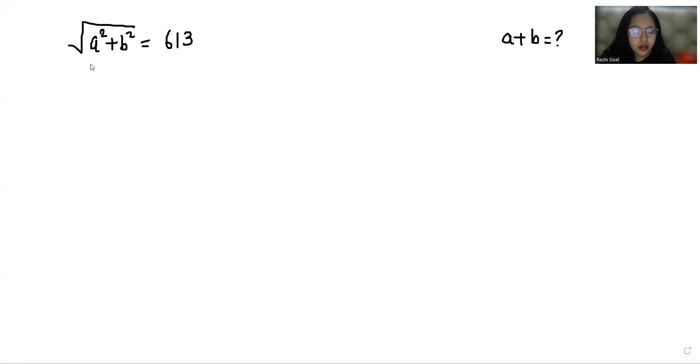So here I am going to first square both sides, so it becomes a² + b² = 613².